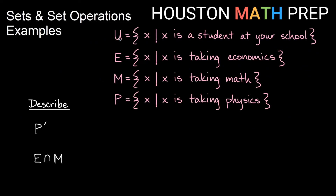Let's look at a couple more examples with some new sets. My universal set is any element X such that X is a student at your school — the set of all students at your school. Set E is the set of all students at your school taking economics, M is all students taking math, and P is all students taking physics.